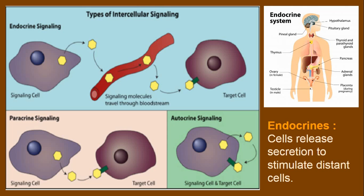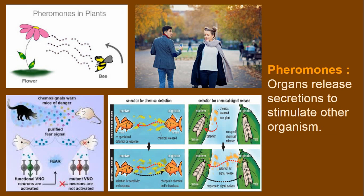The endocrine system is covered in detail in our textbook. The last type is pheromones, where organs release secretion to stimulate another organism.